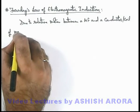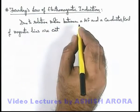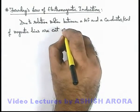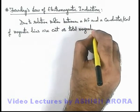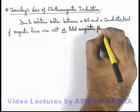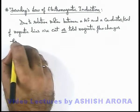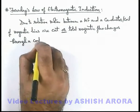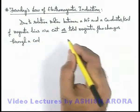if magnetic lines are cut — that means if relative motion is such that between the magnetic field and a conductor or coil, magnetic lines are cut — or total magnetic flux changes through a coil. Whenever lines are cut, the total magnetic flux associated with the coil will change.